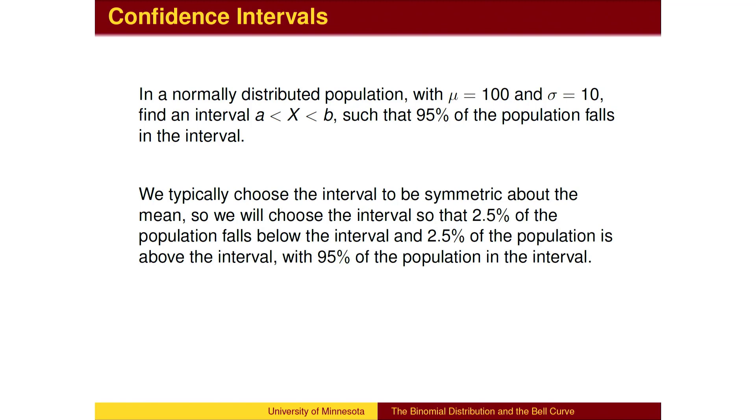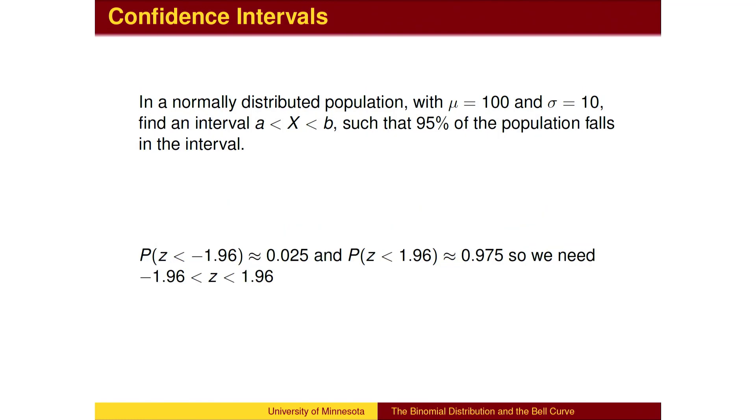We typically choose an interval which is centered on the mean. So, to include 95% of the population in the interval, we wish to chop off 2.5% from each tail. The z-score of negative 1.96 corresponds to 2.5% of the population below that cutoff. So, an interval with z-scores between negative 1.96 and 1.96 will include 95% of the population.